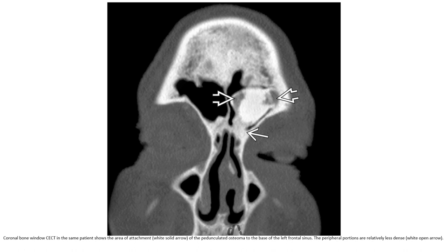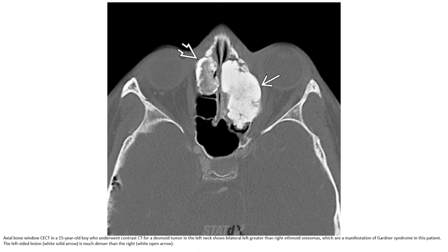The peripheral portion is relatively less dense. Contrast CT in a 15-year-old boy who underwent contrast CT for a soft tissue tumor in the left neck shows bilateral left greater than right ethmoid osteomas, which are manifestations of Gardner's syndrome in this patient. The left-side lesion is much denser than the right.